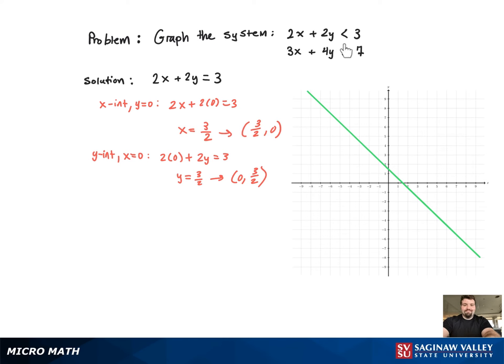And notice that it's strictly less than. That means we're going to have to use a dashed line. And now since it's an inequality, we have to shade a region. To determine if we shade above the line or below the line, we have to use a test point.